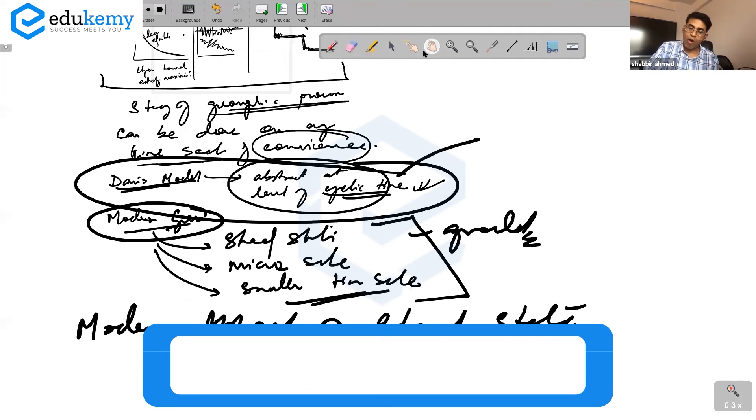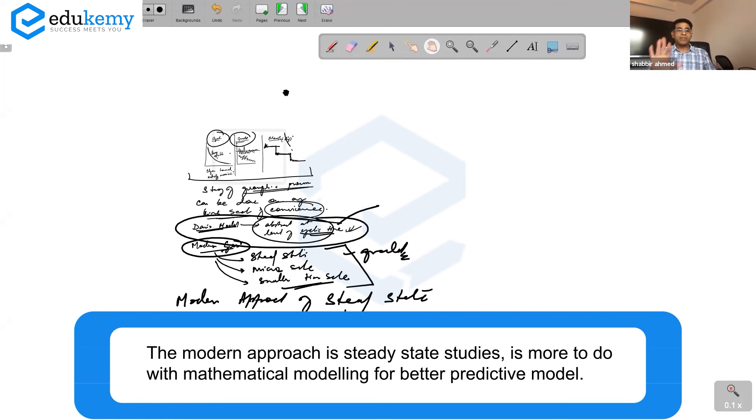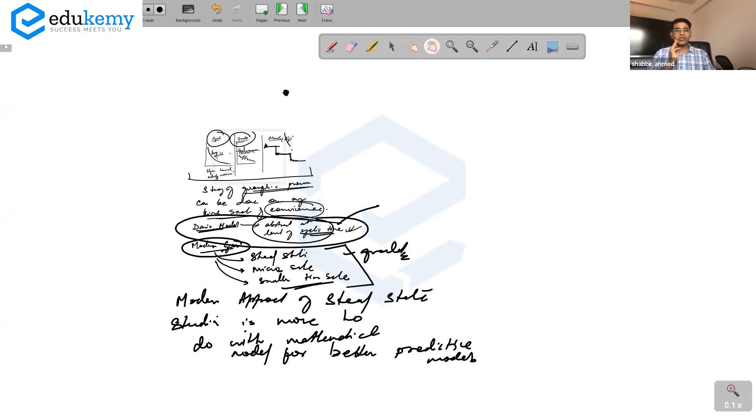The modern approach - steady-state studies - is more to do with mathematical modeling for better predictive models. So scale does matter. There is no surety as to which is the best. These are three approaches of scale: the cyclic time scale, the graded time scale, and the steady time scale.